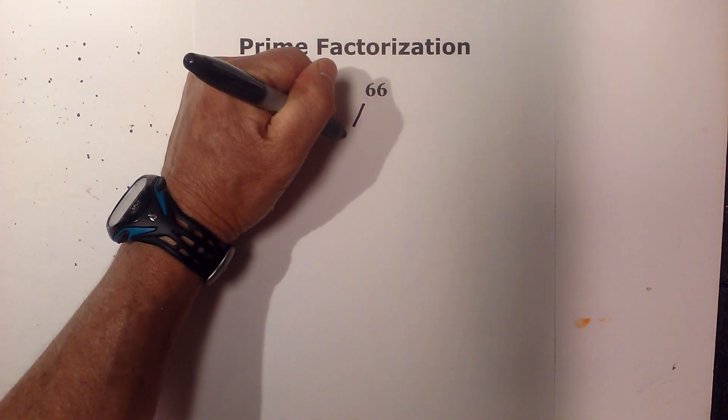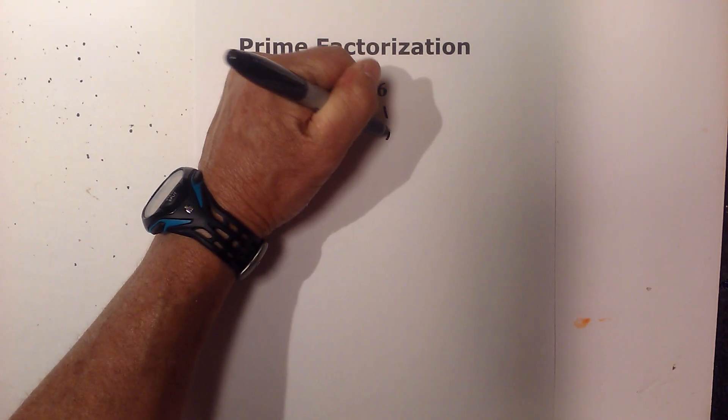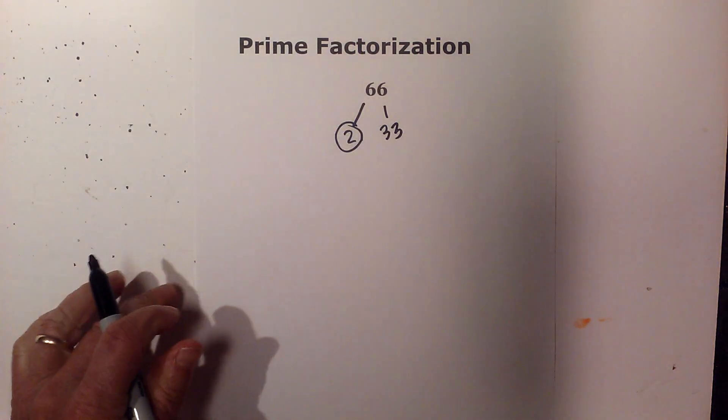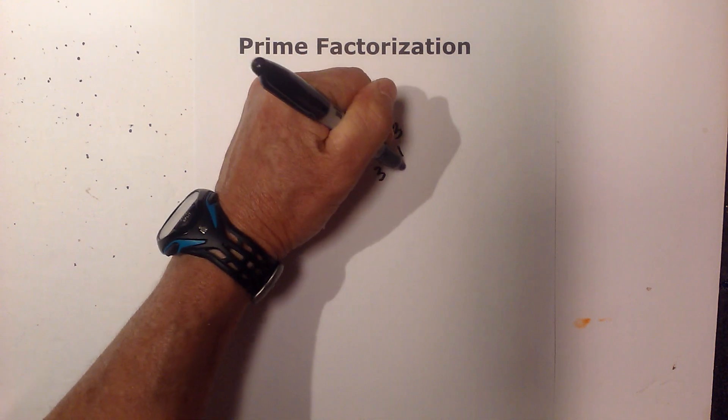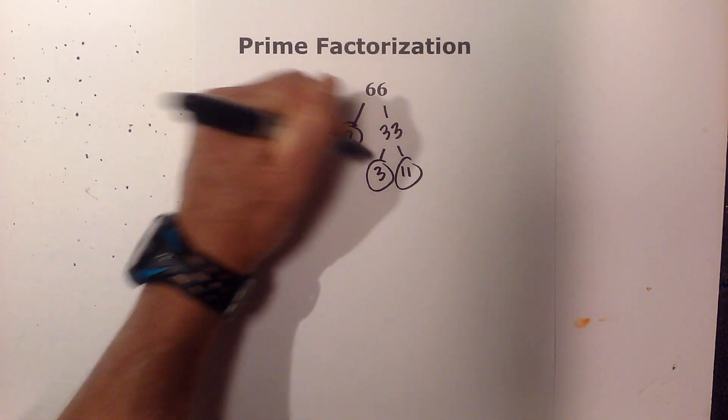First we have 2 times 33. I will circle the 2 because it is prime. And now 3 times 11 equals 33.